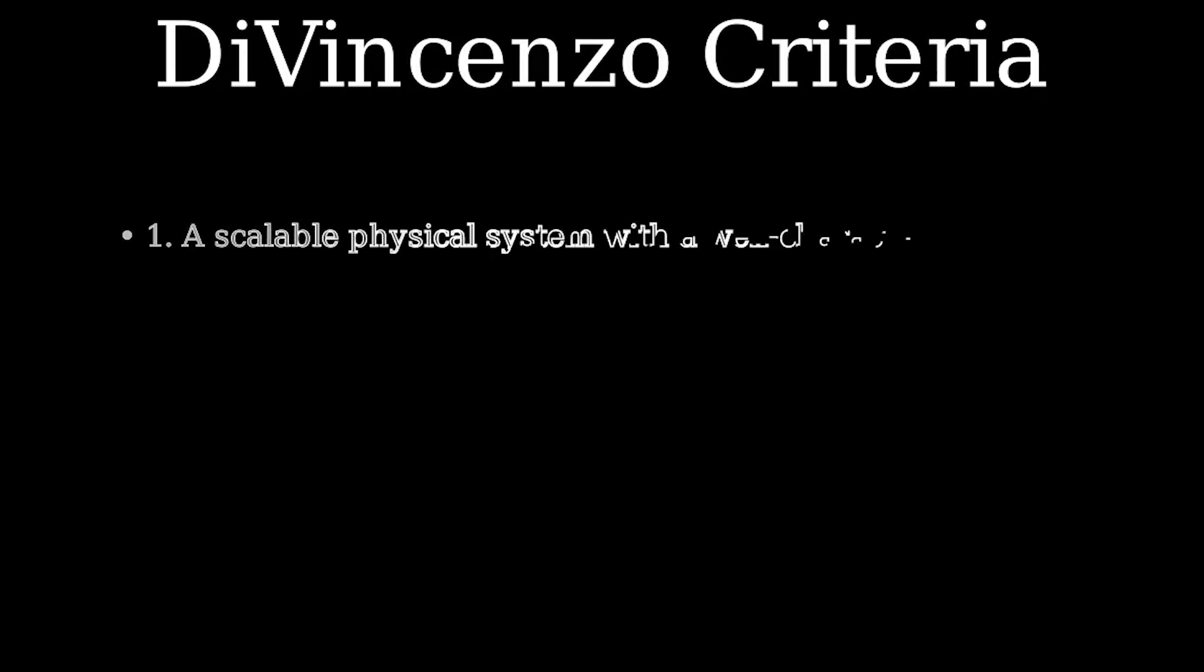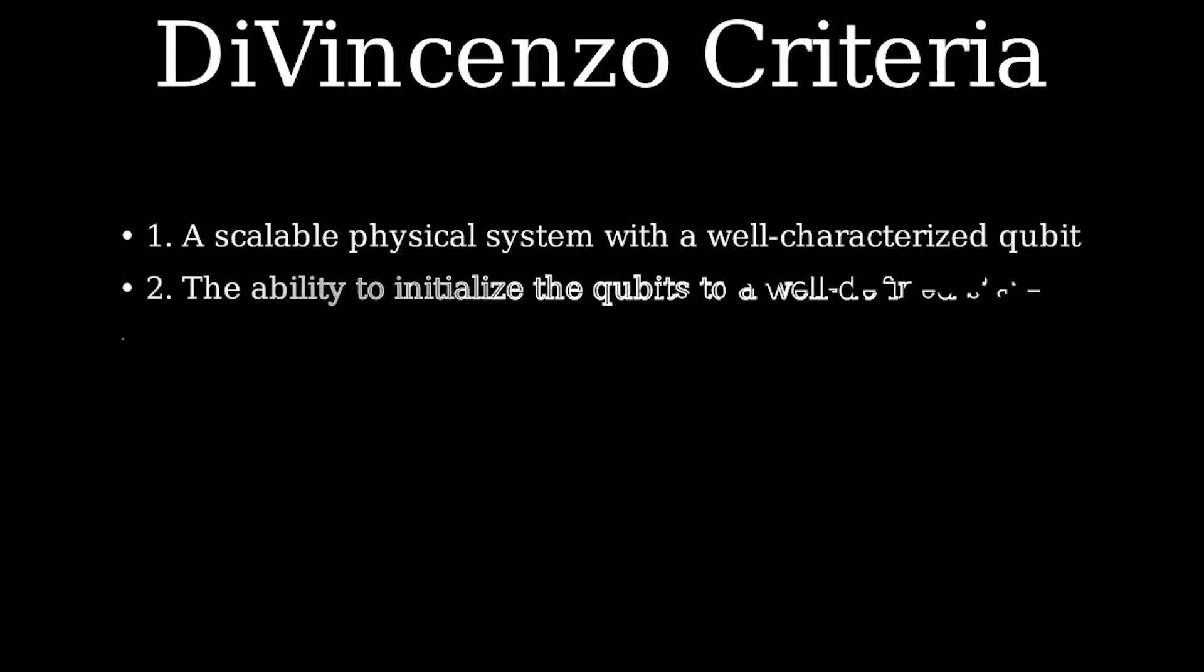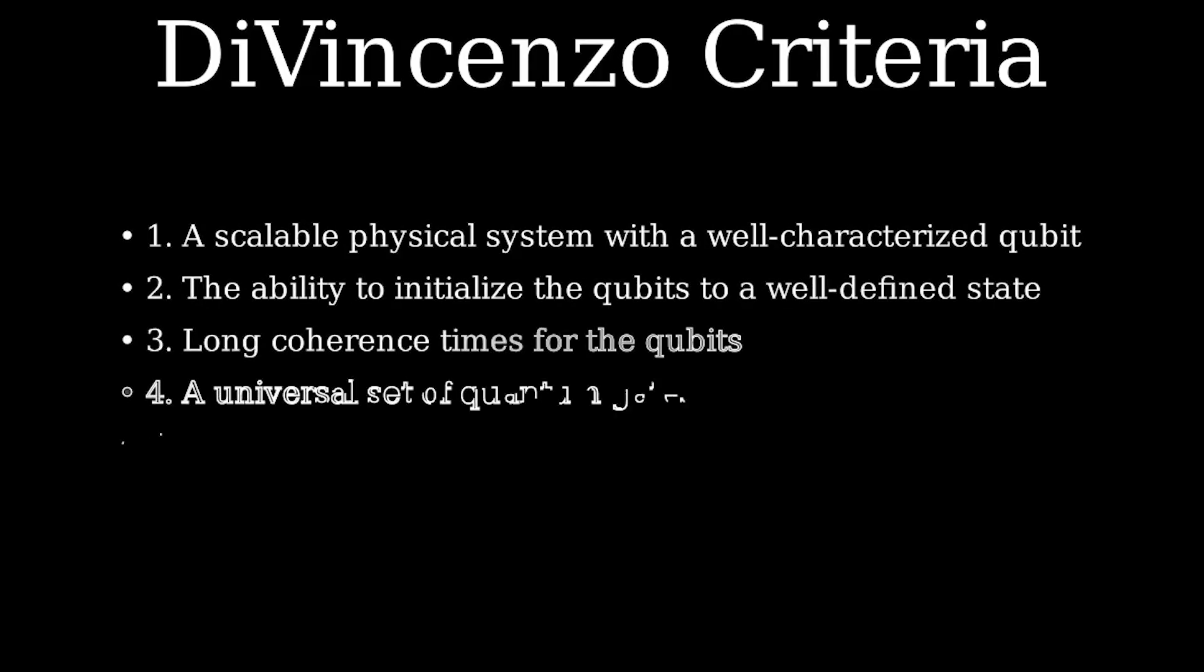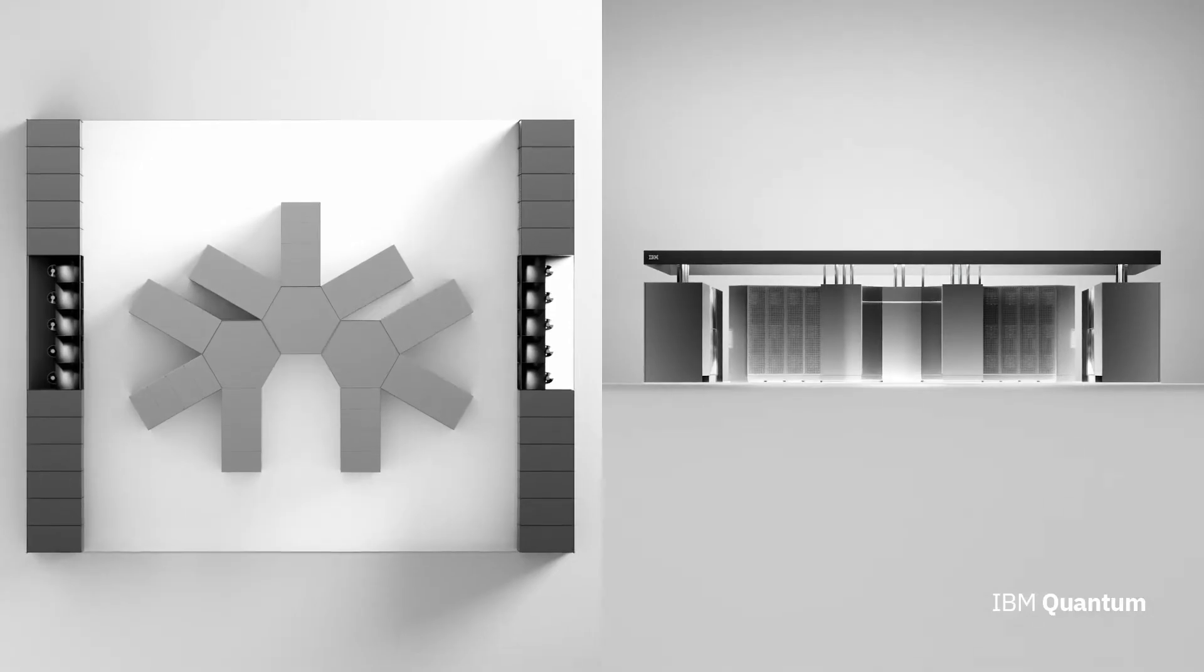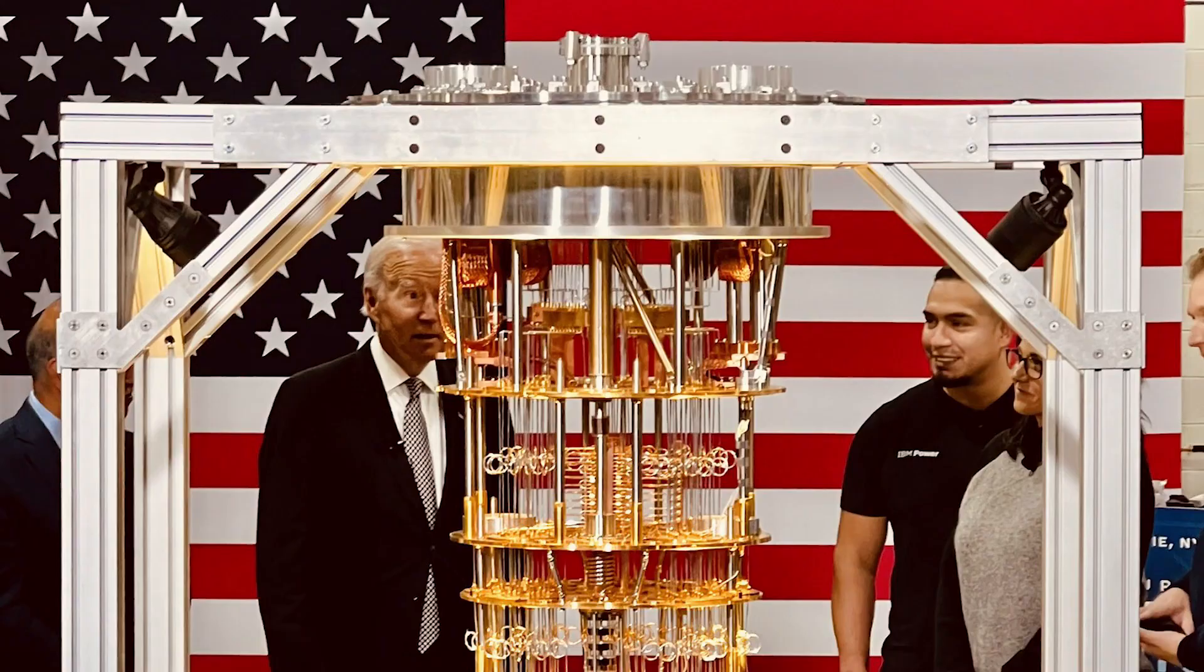If we go a little bit deeper, a quantum computer must satisfy several criteria. These criteria are known as the DiVincenzo criteria, and describe what a fully functional quantum computer must have. Well, that's enough stalling, let's actually answer this question. What does a quantum computer look like?